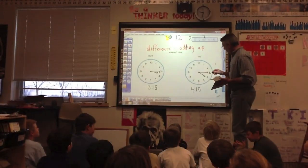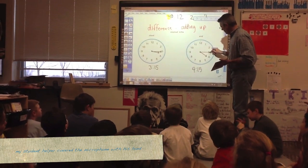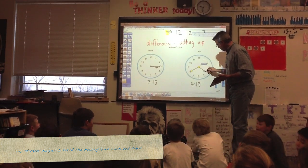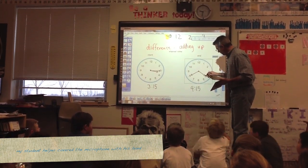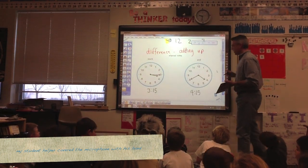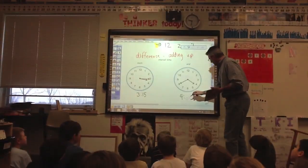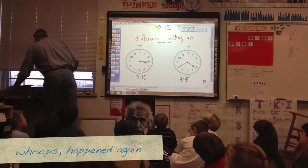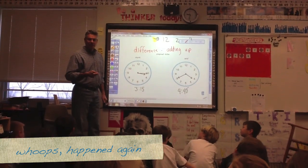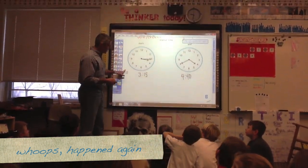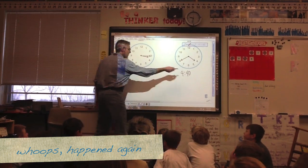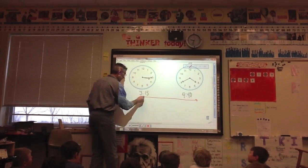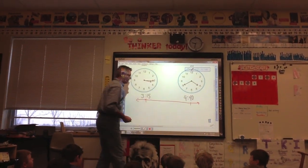Let's say, for example, the end time is 4:40. So let's show how to use counting up to find the elapsed time. Counting up to find the elapsed time — I'm going to put a literal timeline. Now we call this a timeline — it really is a timeline, isn't it? Literally a timeline.